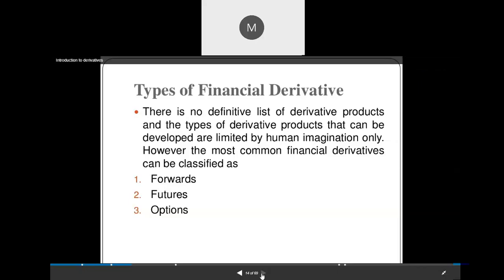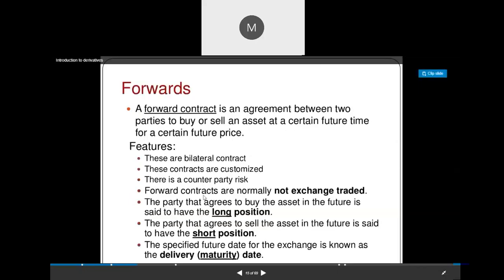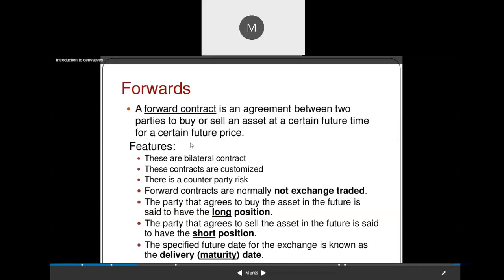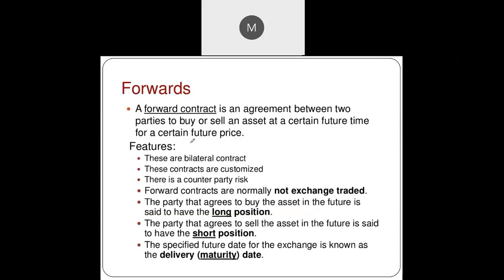The first type of contract is a forward contract. A forward contract is an agreement between two parties to buy or sell an asset at a certain future time for a certain predetermined price. So a forward contract is a contract between two parties who decide to buy an underlying asset at a predetermined price for a future date.